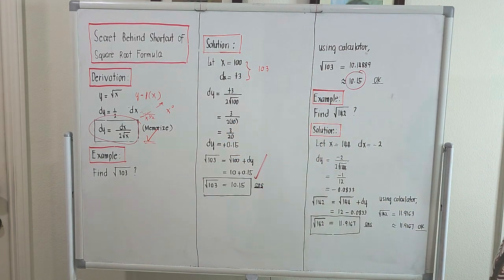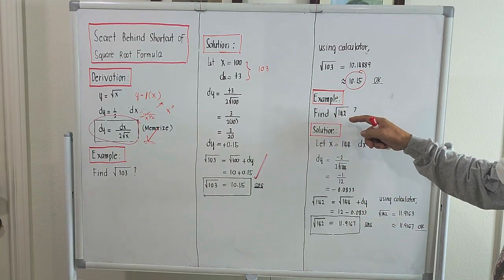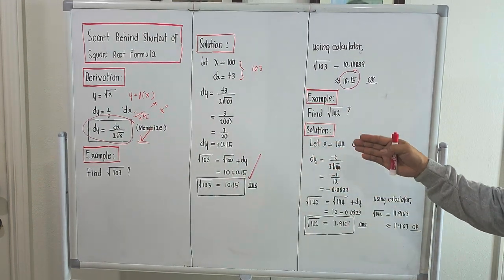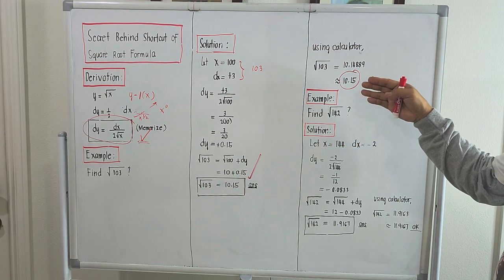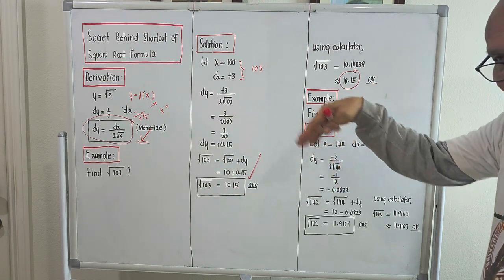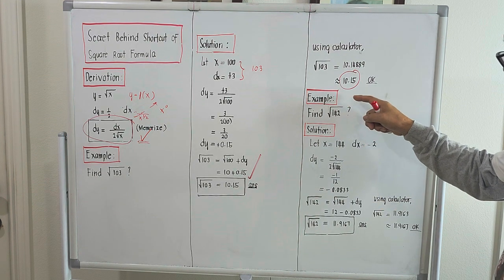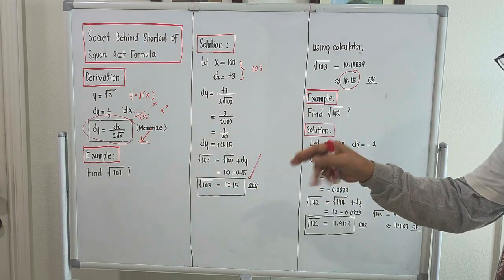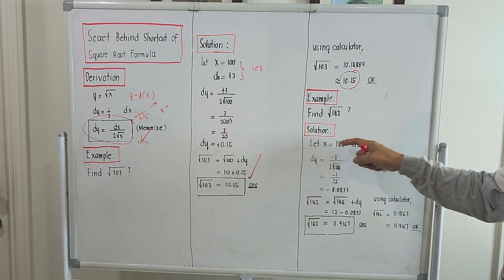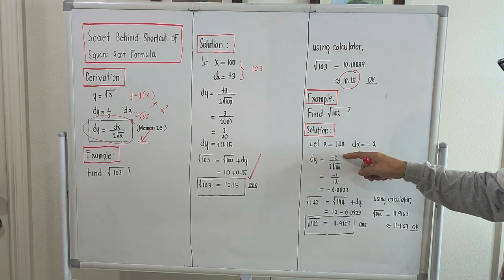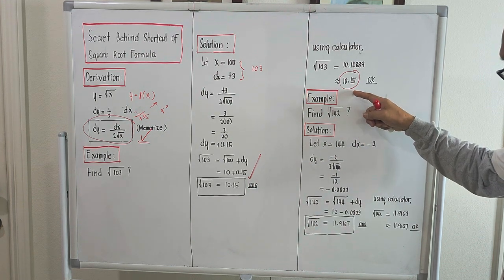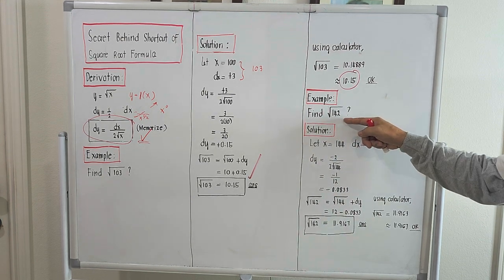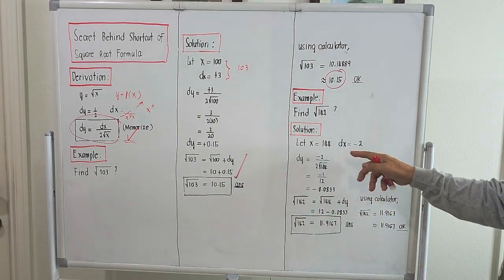Example number two: find the square root of 142. This is a different solution from the first one because our dx here is actually negative. To find the square root of 142, I will let x equal to 144 because 144 is a perfect square that is near 142. So I take x equal to 144, and to satisfy 142, my dx should be negative 2, because 144 minus 2 is 142.